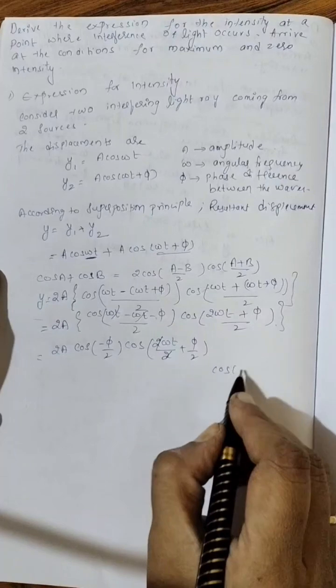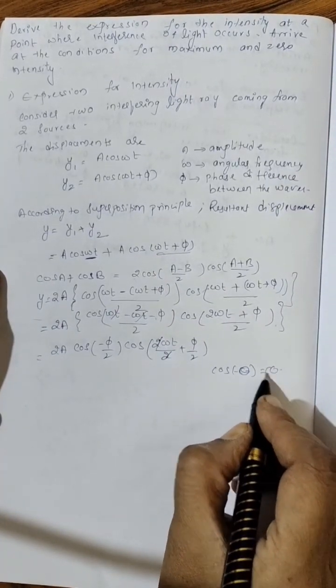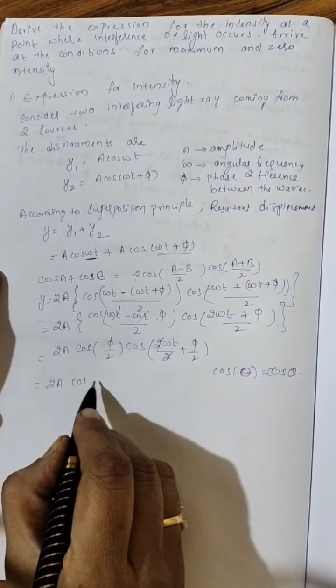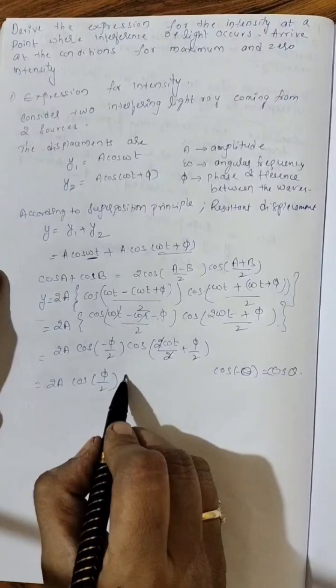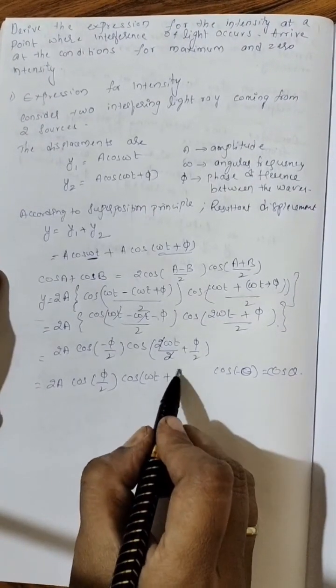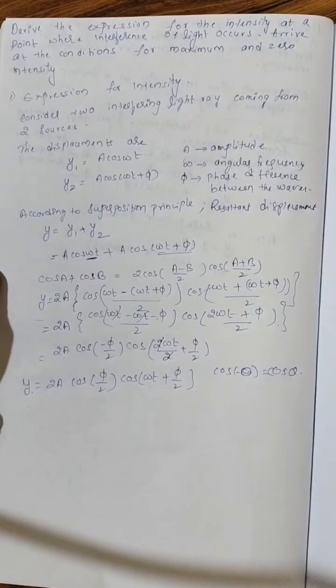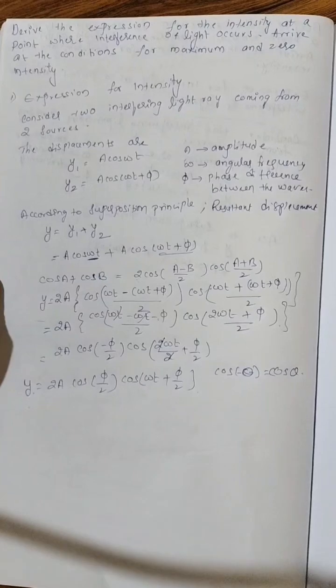Cos minus theta is equal to cos theta, no? Using that, 2A cos phi by 2 cos omega t plus phi by 2. You got Y equal to 2A cos phi by 2 cos omega t plus phi by 2.